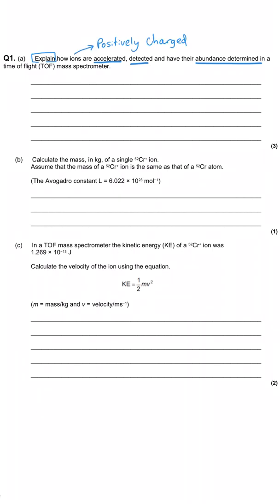well remember the ions are positively charged, and so they're accelerated by attraction to the negatively charged plate in the mass spectrometer, although you could just say they're accelerated by the electric field.